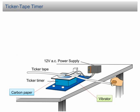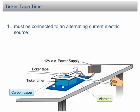Ticker tape timer. A ticker tape timer is a machine used to measure and analyze the motion of an object. In SPM, there are a few things you need to know about a ticker tape timer. First, the ticker tape timer must be connected to an alternating current electric source.